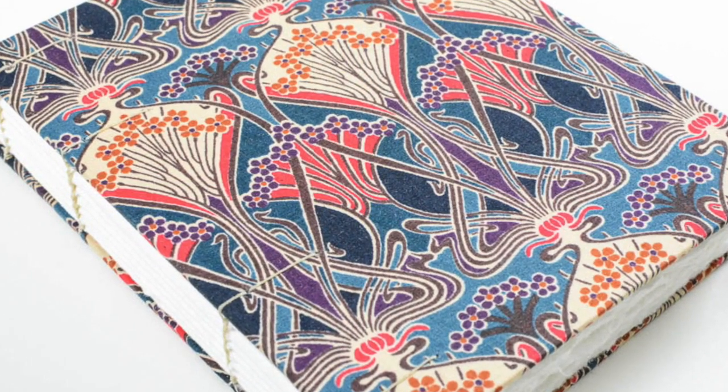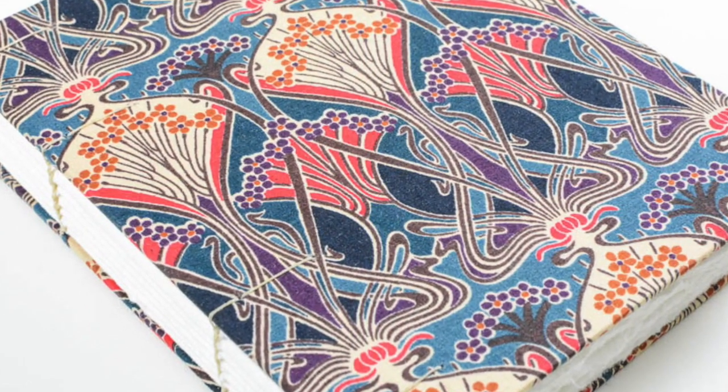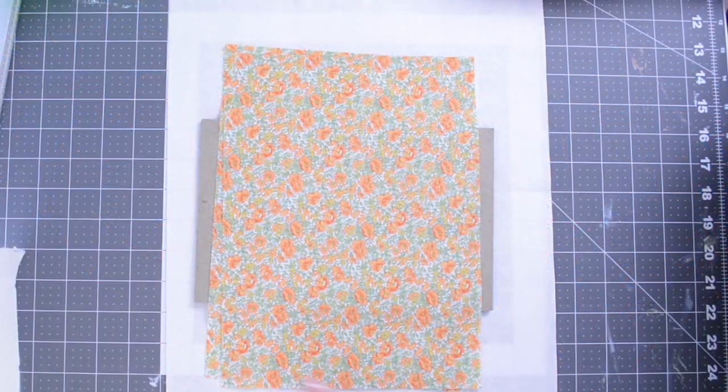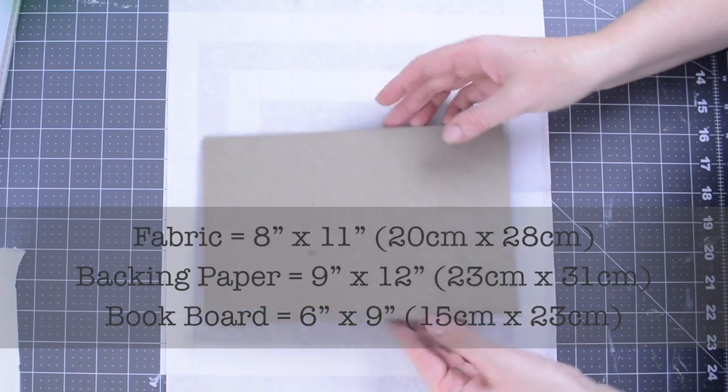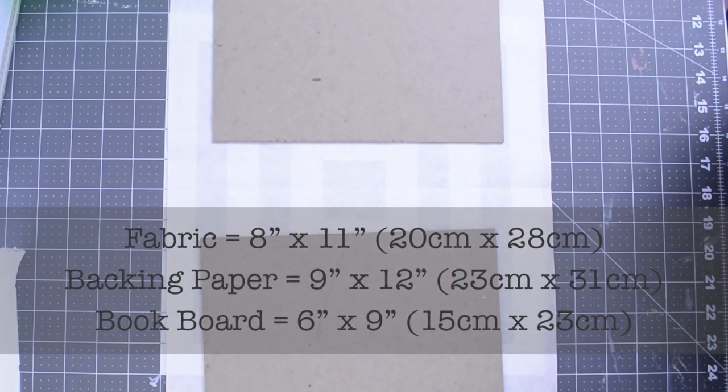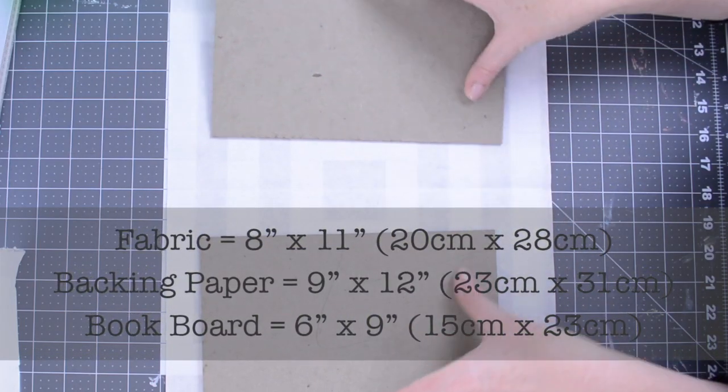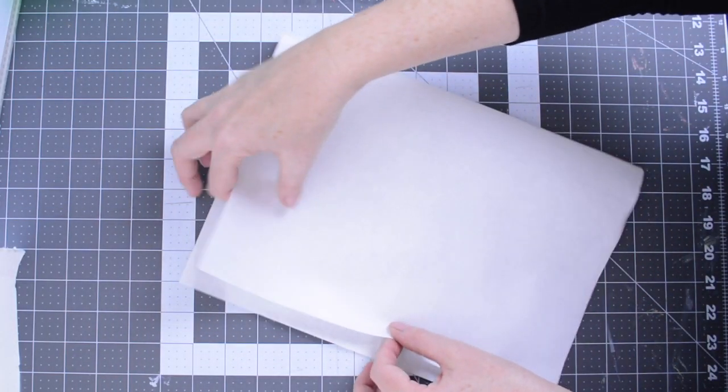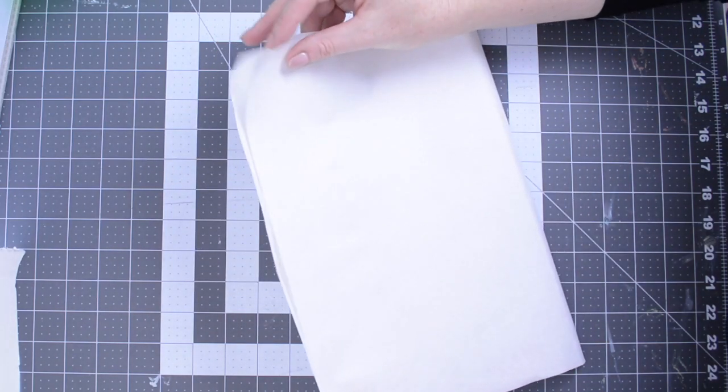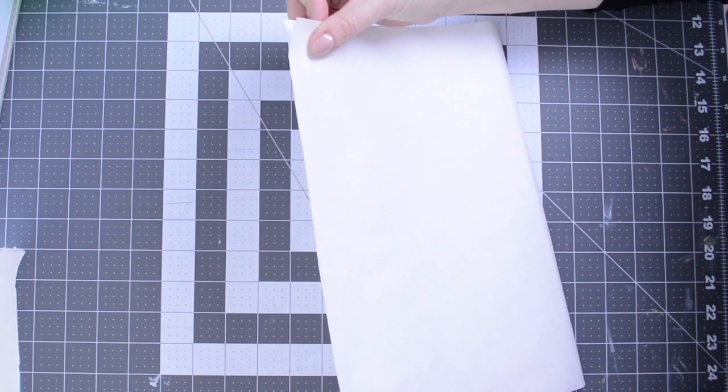In this video I'm going to show you how to make book cloth. So first we'll gather our materials. You'll need two pieces of tightly woven fabric—I use quilting cotton—two book boards, and some backing paper. Mine is 12 by 18 so I'm tearing it in half. I'm using a lightweight sumi sketch paper that doesn't have any grain.